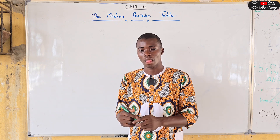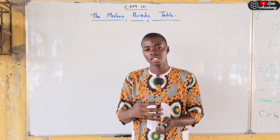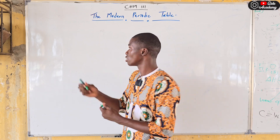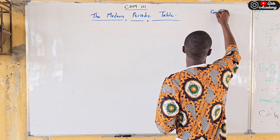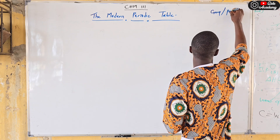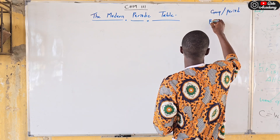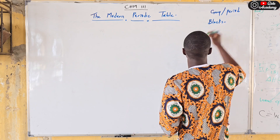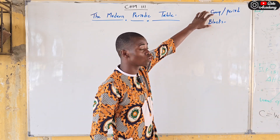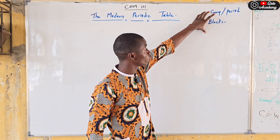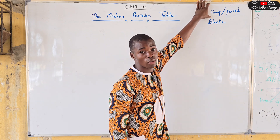For the modern periodic table, it is classified using two formats. The first is group and period, and the second is blocks. The periodic table we use today can be approached using either the group-and-period classification or the block classification. Let's start with group and period.